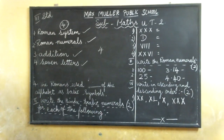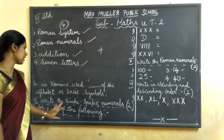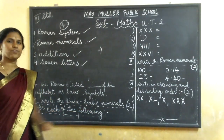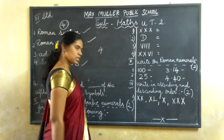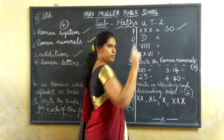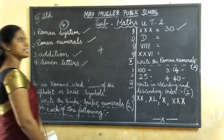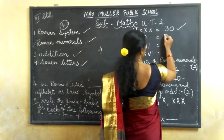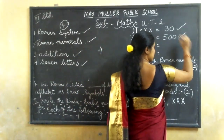Next one — the second main. Write the Hindu-Arabic numerals for each of the following. They have given XXX. XXX means how much? 30. If you have written 30, put a small tick; if it is wrong, put wrong. Half marks for that one. Next, second one — what is the letter they have given? D. D means 500. If it is correct, put a small tick; if it is wrong, put wrong.